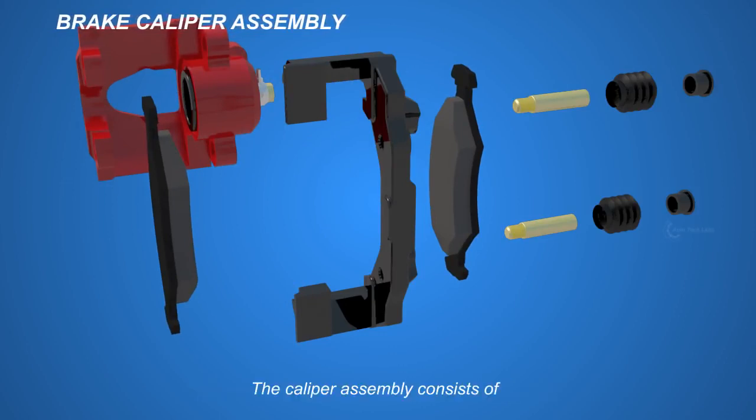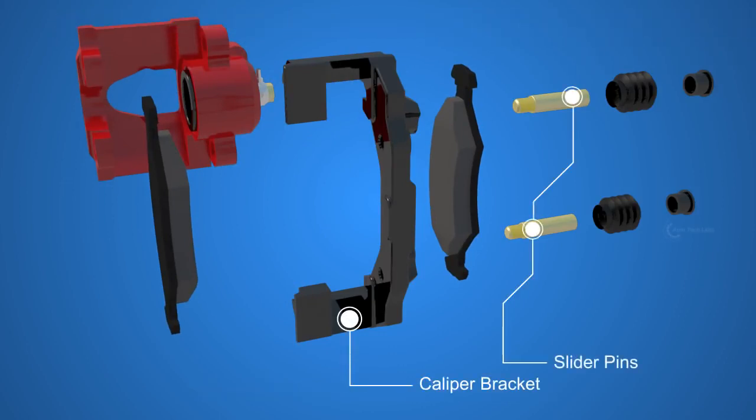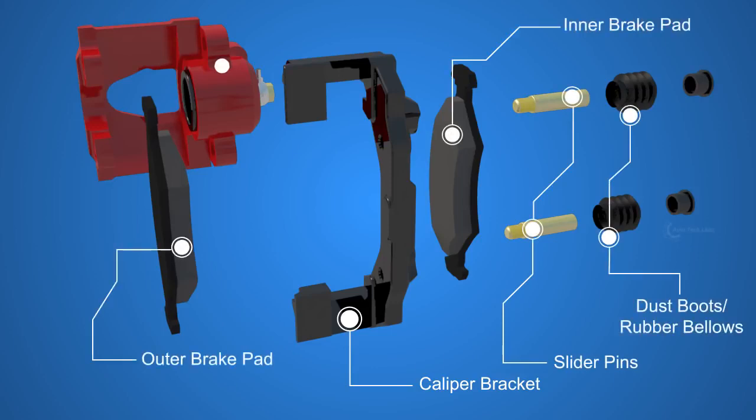The caliper assembly consists of the caliper bracket, slider pins, dust boots, inner brake pad, outer brake pad, caliper frame, and inside it, the piston.